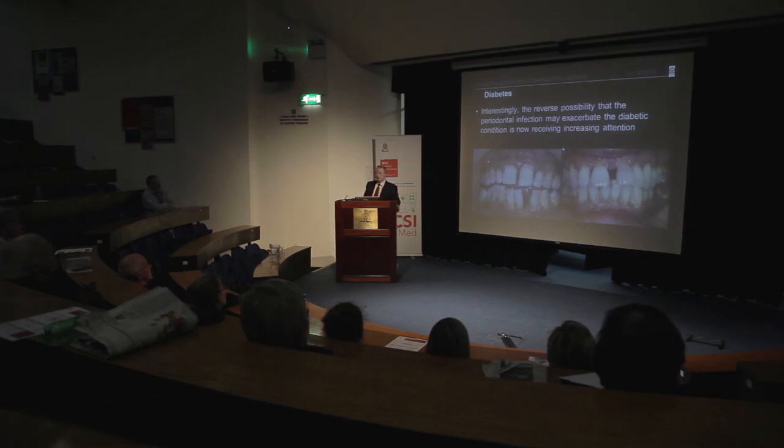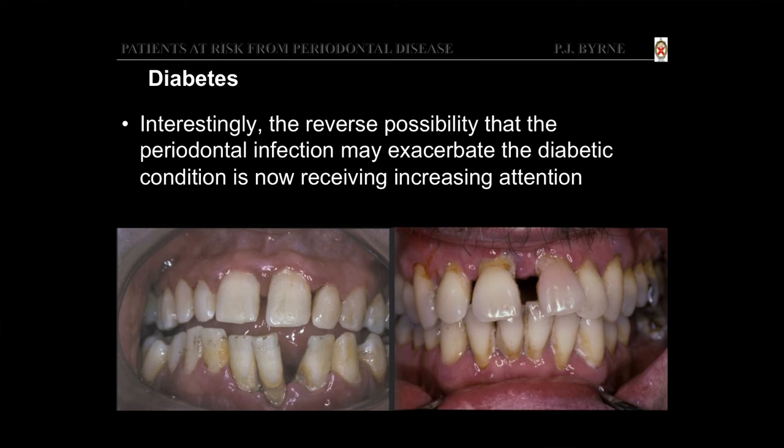Interestingly, the reverse possibility — that periodontal infection may exacerbate the diabetic condition — is now receiving increasing attention. Several studies have looked at this: worsening periodontal disease adversely affects glycemic control, making it harder to keep under control. It's been suggested that inflammation may be one of the links between the two diseases, and treatment of periodontal disease, especially in patients with elevated glucose levels, improves glycemic control.